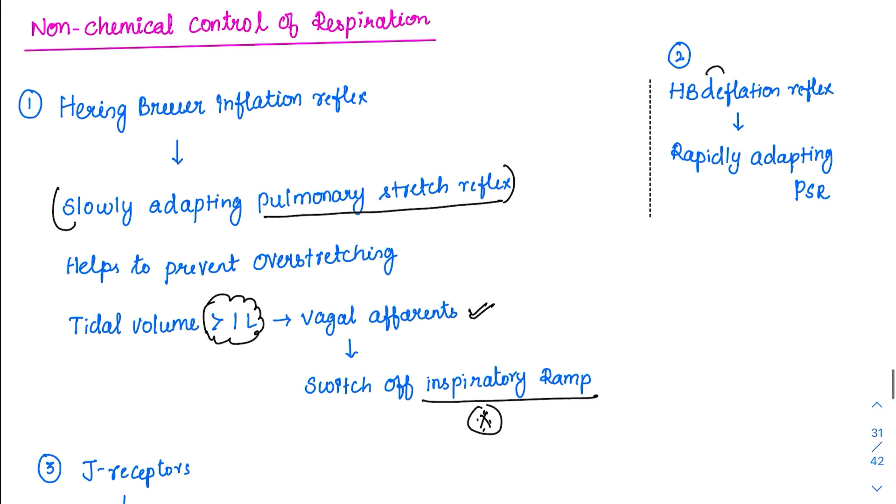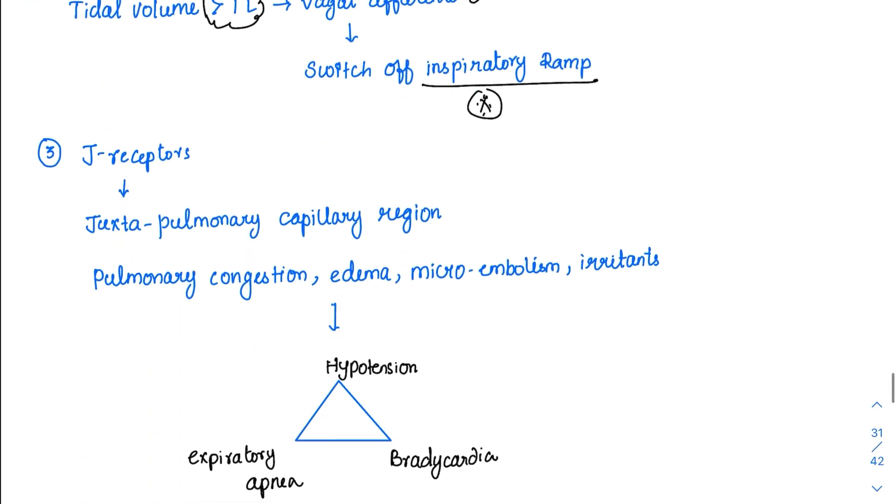Then there is another reflex which is called as Hering-Breuer deflation reflex. Suppose an alveolar is going for a collapse, it will be sensed by the rapidly adapting pulmonary stretch reflex and it will cause inflation or inspiration. So it is just opposite of Hering-Breuer inflation reflex.